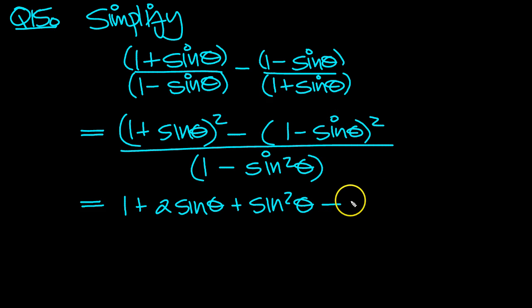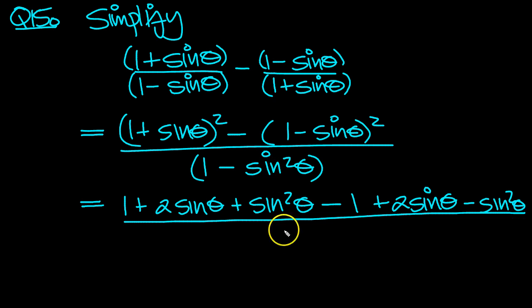So the first term will be 1, so that's minus 1. The second will be minus 2 sin theta, so that makes it plus 2 sin theta. And the last term is sin squared with a plus. This will make it a minus sin squared theta all over, and 1 minus sin squared theta is none other than cos squared theta.